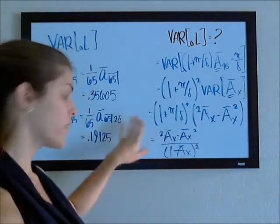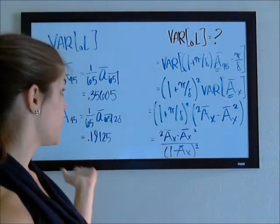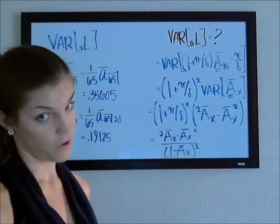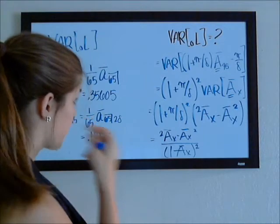simplifies to the second moment minus the expected value squared over 1 minus the expected value of your insurance quantity squared. So, you can work that out for yourself and see that it's true, or you can just calculate this piece as a third thing and then plug everything in.